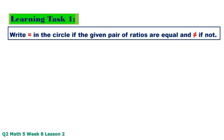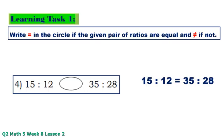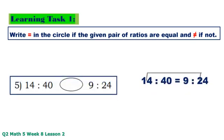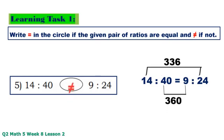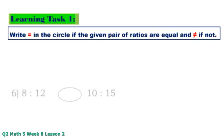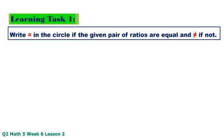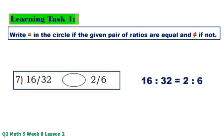Number 3: 6 times 100 equals 600, 7 times 75 equals 525. Not equal. Number 4: 15 times 28 equals 420, 12 times 35 equals 420. Equal. Number 5: 14 times 24 equals 336, 40 times 9 equals 360. Not equal. Number 6: 8 times 15 equals 120, 12 times 10 equals 120.